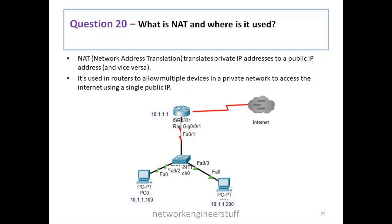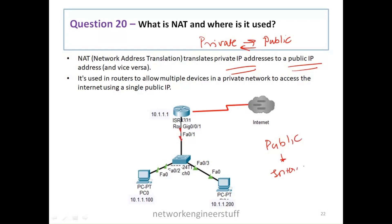Question number 20: what is NAT and where is it used? NAT is Network Address Translation, which translates private IP addresses into public IP addresses and vice versa. Private IP addresses are used within a LAN, while public IP addresses are used on the internet. When you communicate within your LAN you use private IP addresses, but when communicating with a public network you use a public IP address.